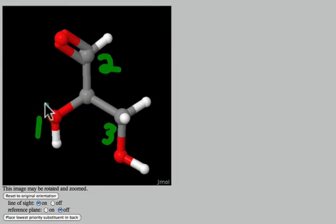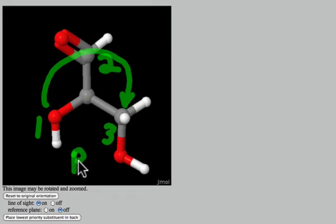Traveling from the highest priority substituent to the next highest priority and the third highest priority, we travel in the clockwise direction. The clockwise direction is assigned to the R configuration. If we had gone in the counterclockwise direction, we would have assigned this the S configuration.